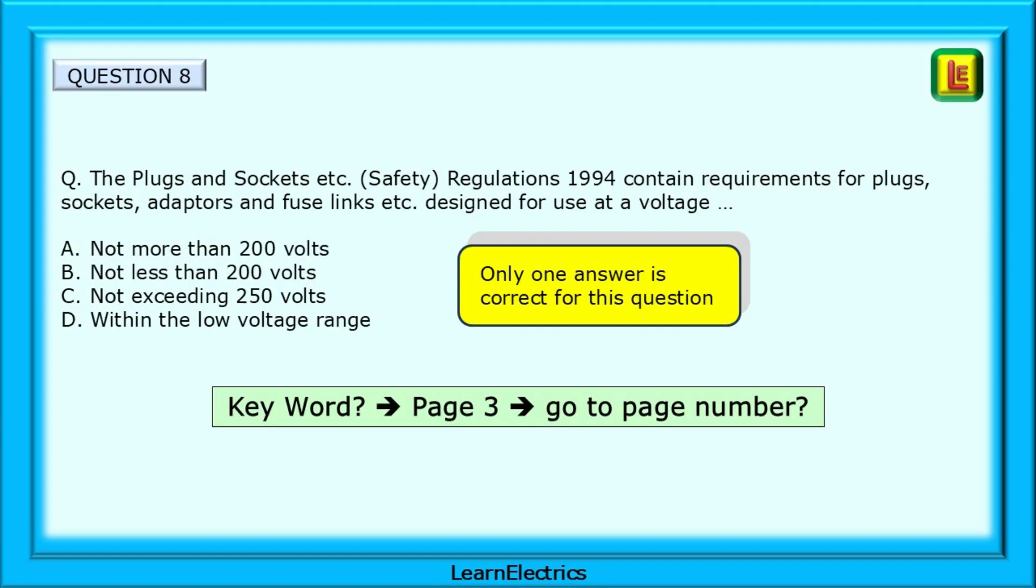Question 8. The plugs and sockets, etc., safety regulations, 1994, contain requirements for plugs, sockets, adapters, and fuse links, etc., designed for use at a voltage of what?